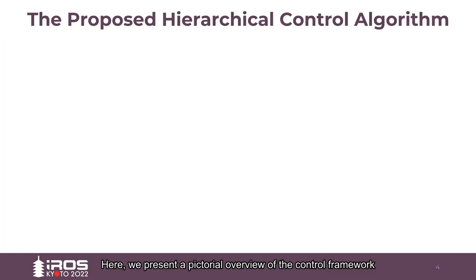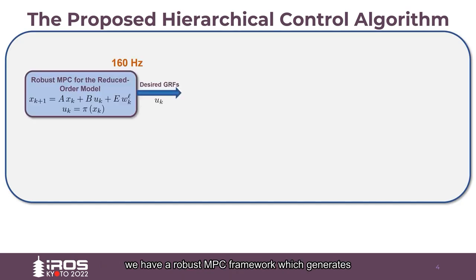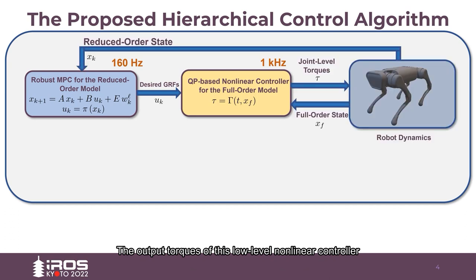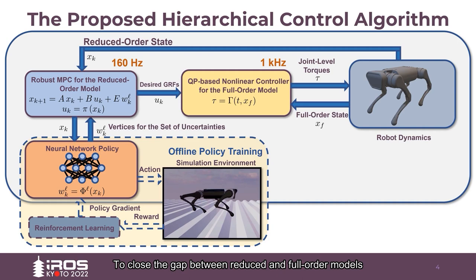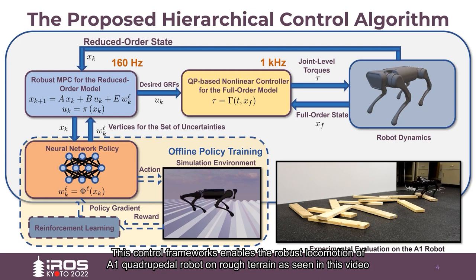Here we present a pictorial overview of the control framework. We have a robust MPC framework, which generates desired ground reaction forces, which are then tracked by a low-level non-linear controller. The output torques of this low-level non-linear controller are then used to generate the desired motion in the robot. To close the gap between reduced and full order models, we compute an uncertainty set using a neural network that is trained offline. This control framework enables the robust locomotion of A1 quadrupedal robot on rough terrain, as seen in this video.